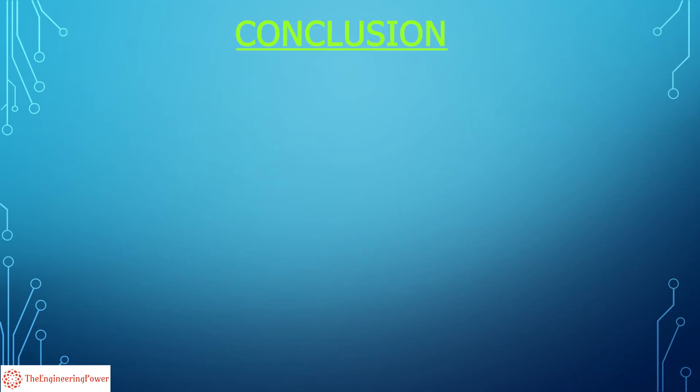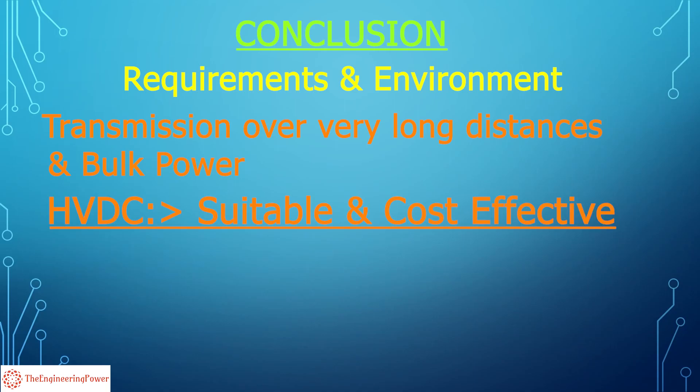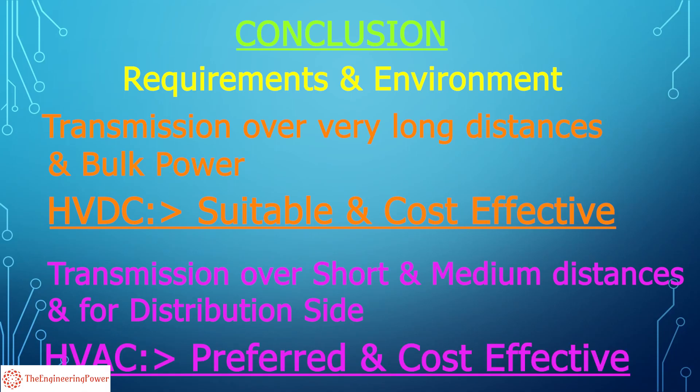So the conclusion is that both HVAC and HVDC have their own advantages and disadvantages. The selection of HVAC or HVDC mode of power transmission depends on the particular requirements and the environment we are working in. Generally, for transmission over very long distances and for bulk power, DC system is more suitable and cost effective, whereas for short and medium distance transmission and distribution side, AC system is preferred.